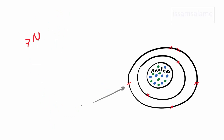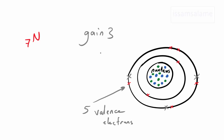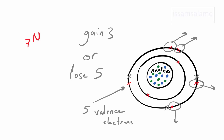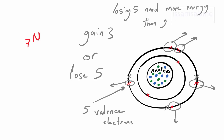For a better understanding, look at this atom of nitrogen with 7 electrons. It has 5 valence electrons. To apply the octet rule, it needs to gain 3 more electrons, or it needs to lose 5 valence electrons. Think about it — which is easier, to gain 3 electrons or to lose 5 electrons? For sure, it is much easier to gain 3 than to lose 5 electrons. So usually nitrogen gains 3 electrons.